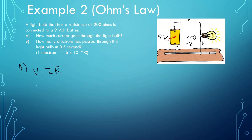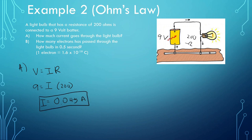We know what the voltage is — that's from the battery. We don't know what the current is, but we do know that the resistance of the light bulb is 200 ohms. Now we can find what the current is: 9 divided by 200, and we see that we have a current of 0.045 amps. Since that light bulb has a lot of resistance, that means it makes the current hard to flow through it.